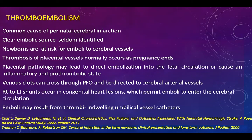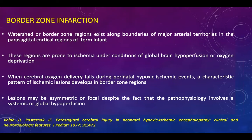Thrombosis of placental vessels normally occurs at the end of pregnancy, and placental pathology may lead to direct embolization into the fetal circulation or may induce an inflammatory or prothrombotic state. Congenital cardiac defects with right-to-left shunt can lead to thromboembolism. Additionally, with the increased use of indwelling arterial catheters, this problem can also arise.